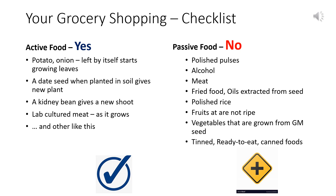So with this, I am sure I have confused you enough — you were used to vegetarian and non-vegetarian, and here I say active and passive. So what should your grocery or shopping list look like? Active food — yes. Potato, onion, tomato, left by itself starts growing leaves and shoots. A date seed, when planted in soil, gives new plants — so dates, yes. Kidney beans, yes. Lab-cultured meats and others like this.